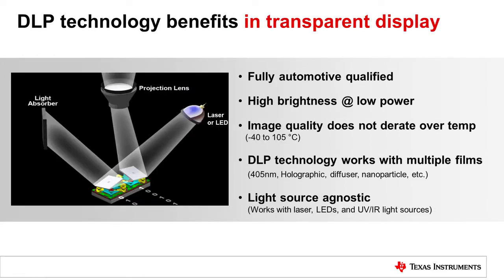DLP technology has several benefits when used in transparent displays, including the following. DLP technology is fully automotive qualified and in production. DLP technology delivers high brightness at low power, enabling smaller projector designs and longer battery life. Image quality does not derate over the operating temperature range of negative 40 to 105 degrees Celsius. And DLP technology is light source agnostic and can drive most, if not all, transparent films.